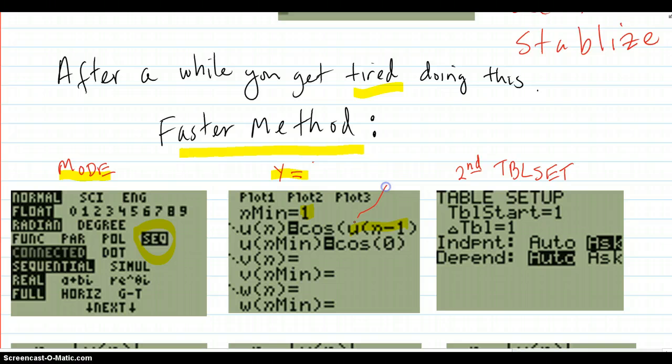It's obtained by second 7 on the 7 key. Second 7 gets you that u. The n is the x, t, theta, n key, like when you're going to put x somewhere. But it knows you're in sequence mode, so it puts n. You subtract 1 the normal way.